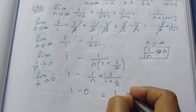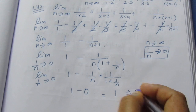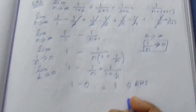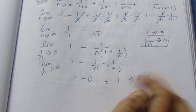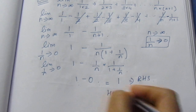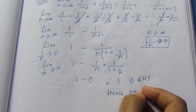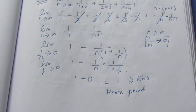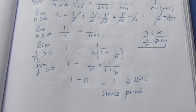This is equal to 1, which is our RHS. This is our proof — hence proved. We have finished this sum. Thank you.